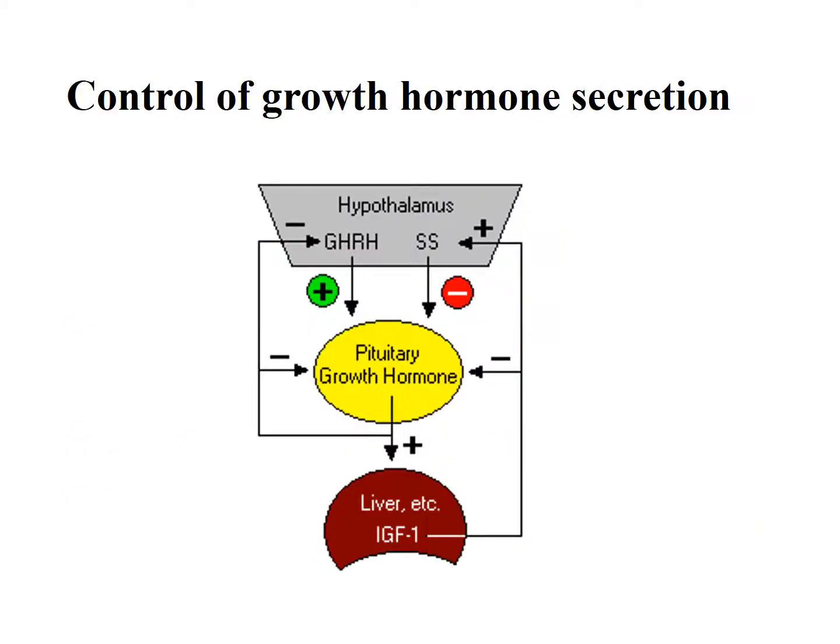Control of Growth Hormone Secretion: Growth hormone is secreted from the pituitary gland. Its secretion is regulated by releasing and inhibiting hormones released from the hypothalamus. Growth Hormone Releasing Hormone stimulates the release of growth hormone from the pituitary, while somatostatin — also called Growth Hormone Release Inhibiting Hormone — inhibits its release.